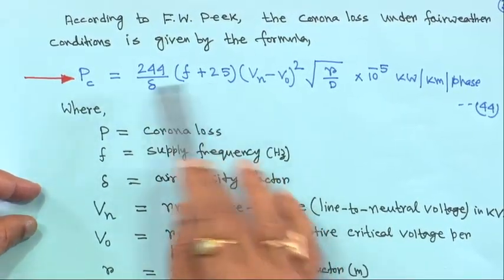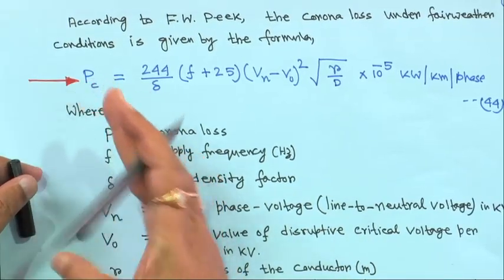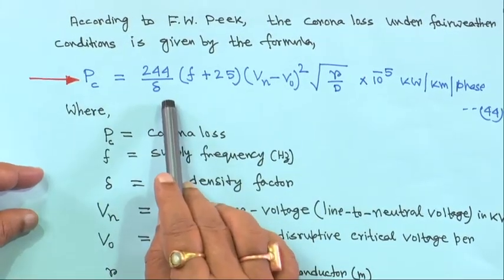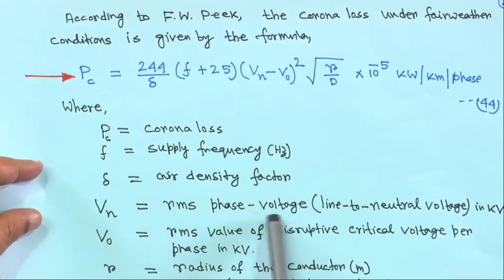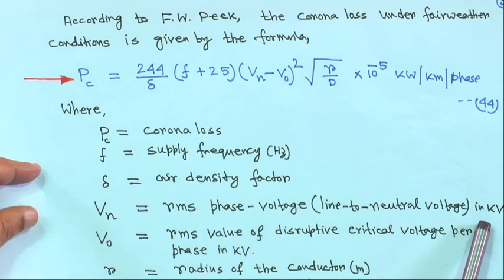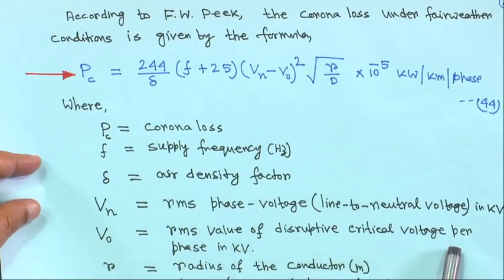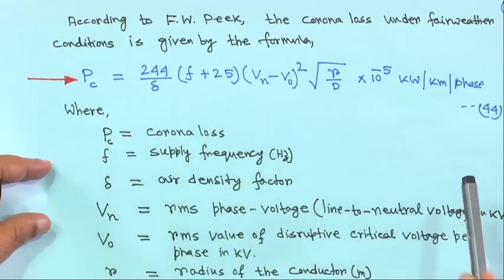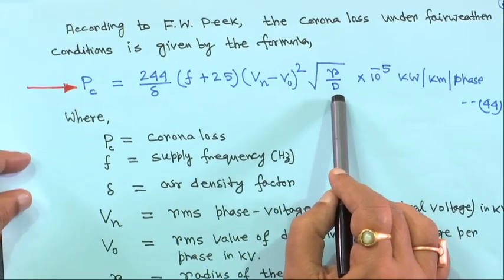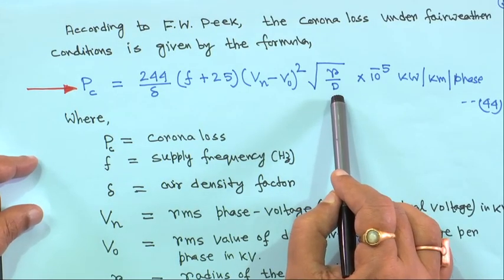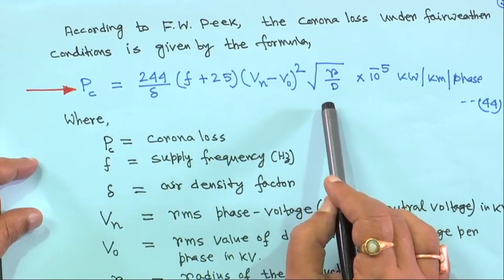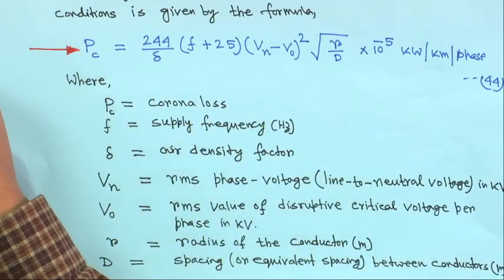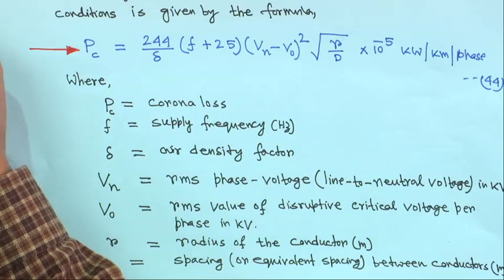In this formula, PC is the corona loss, f is the supply frequency, δ is the air density factor, VN is the RMS phase voltage (line to neutral) in kV, V0 is the RMS disruptive critical voltage per phase in kV, R is the radius of the conductor, and D is the spacing or equivalent spacing between conductors. For single phase, D is used directly; for three phase, DEQ = (DAB × DBC × DCA)^(1/3) is used. This is Peek's formula under fair weather conditions.